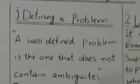Defining a problem is a definition. A well-defined problem is the one that does not contain ambiguities. Ambiguities means confusion. Problem is to define the problem properly, so that there is no confusion. And if the problem is well-defined, then you can use three strategies.